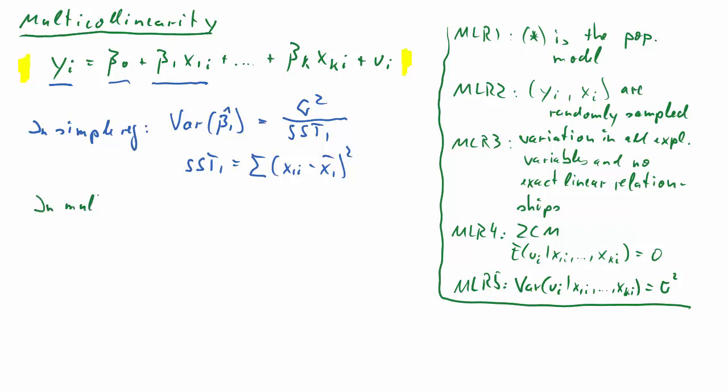Now, however, we are looking at this multiple regression model, which we're seeing up there. In that case, it turns out the variance for beta 1 hat can be written down as follows: sigma squared divided by SST1 as before, but now we also have another factor in the denominator, 1 minus R1 squared.